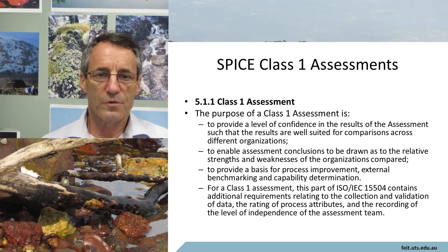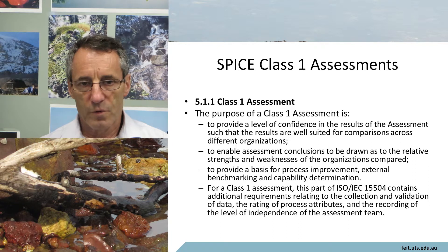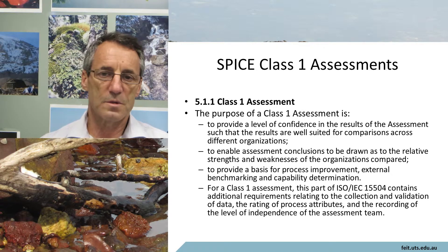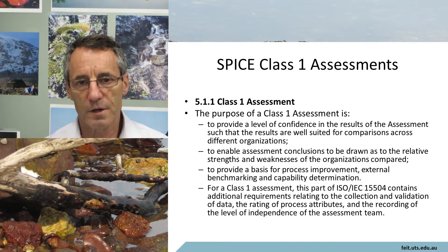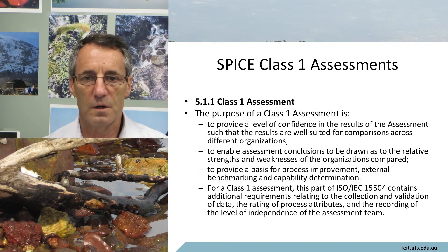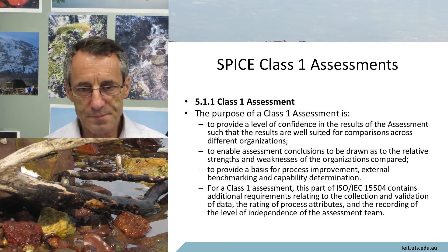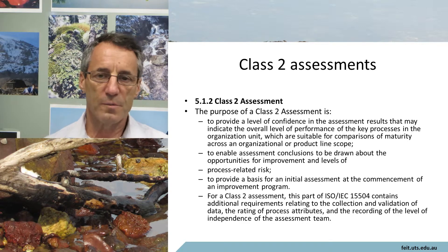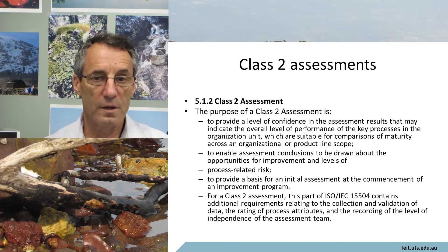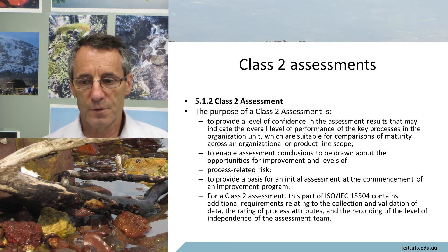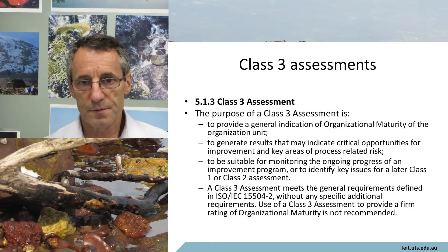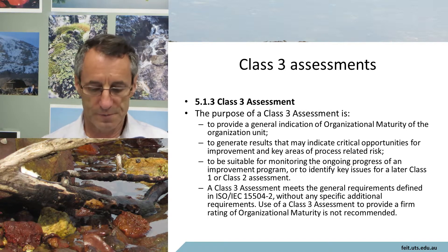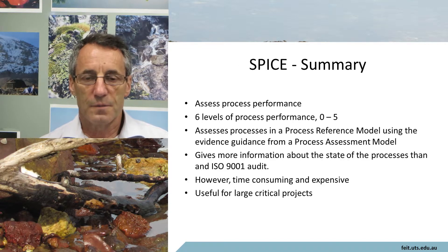A SPICE assessment can be performed at different levels of rigor. The highest level of rigor is normally reserved for contractual circumstances — if an assessment is done to determine whether an organization is capable of fulfilling a contract, because quite a lot of money rides on it. The lower levels of rigor are used when the assessment is done mostly for information purposes. If an organization wants to know how good they are just for internal purposes, they can use a lesser level of rigor. The least rigorous method is essentially one person going around and checking things off.